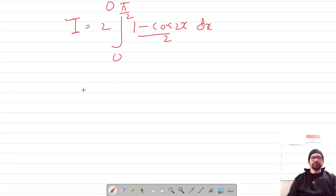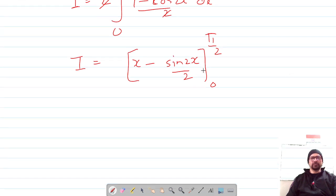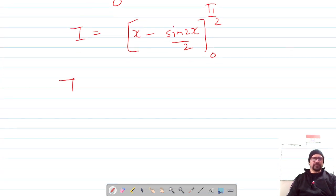The 2 can be taken out and cancels with the denominator 2. Integration of 1 is x, and integration of cos 2x is sin 2x/2. This has to be evaluated at the limits from 0 to π/2.